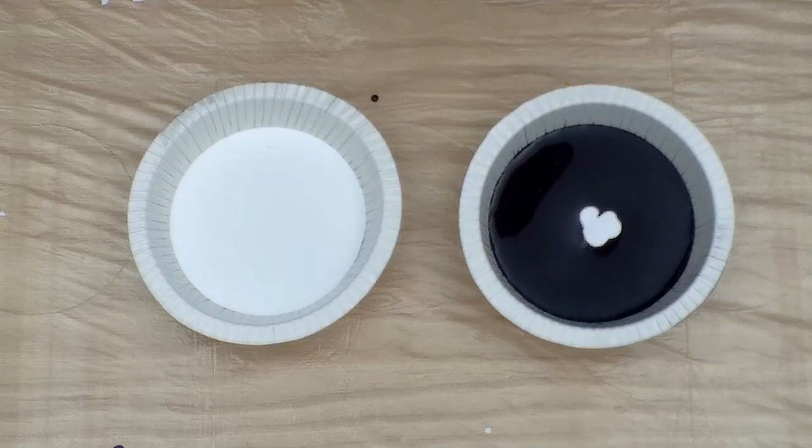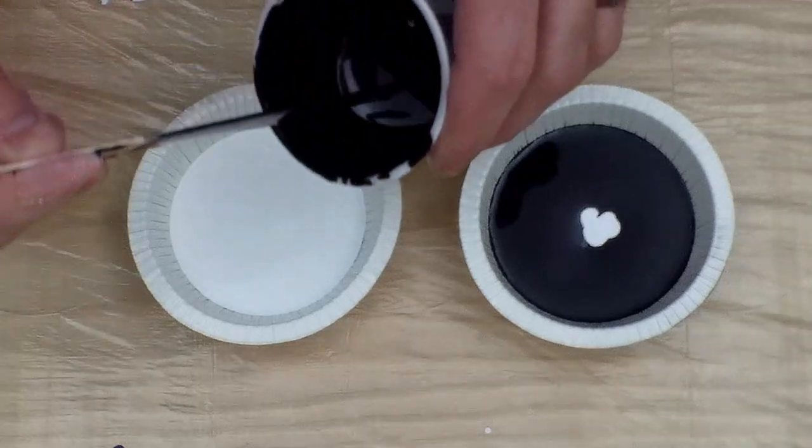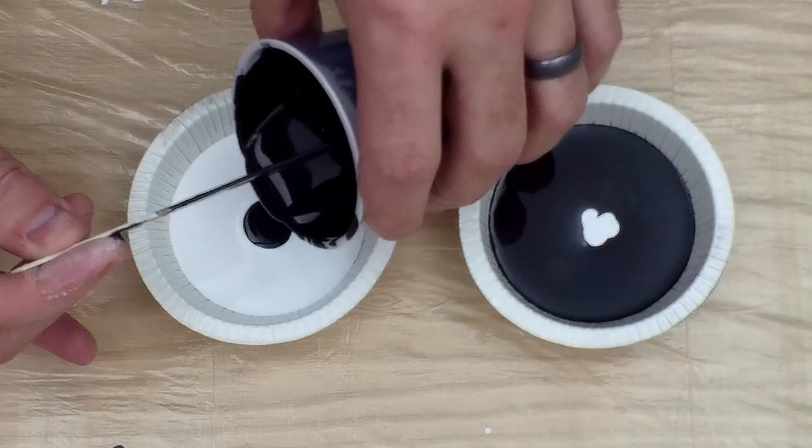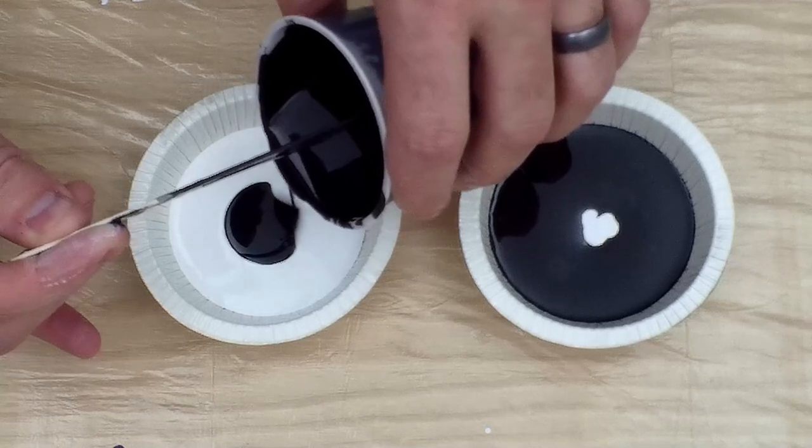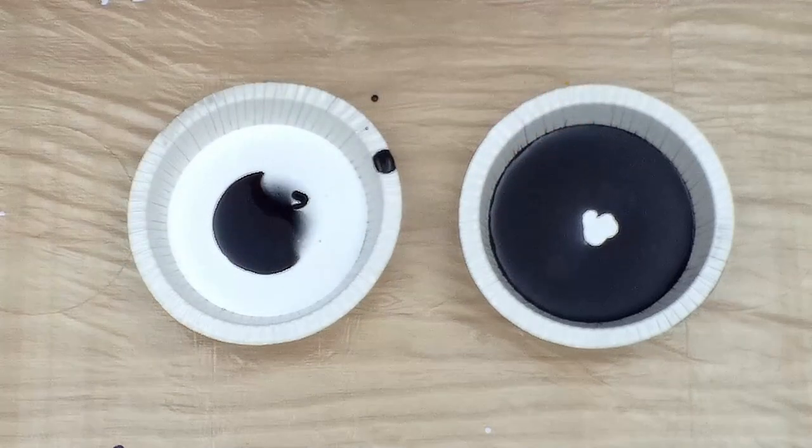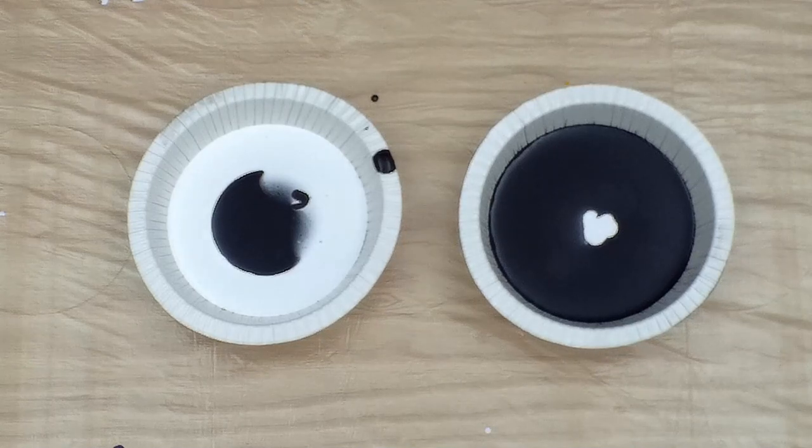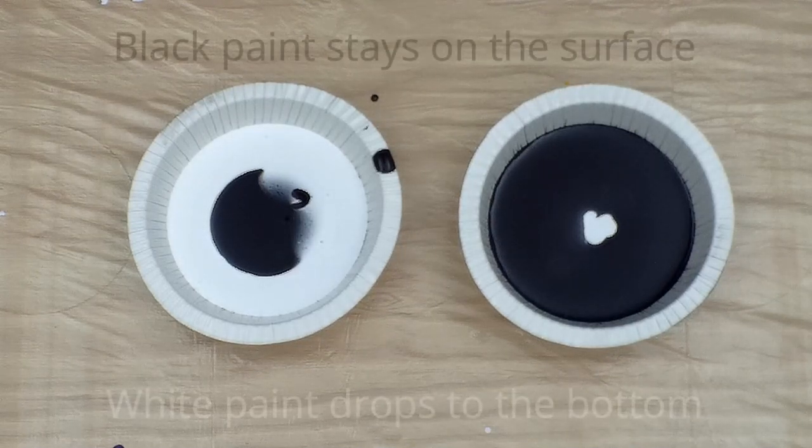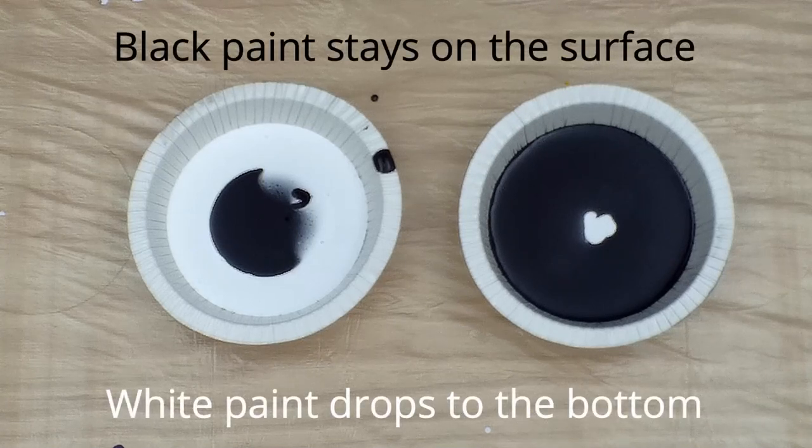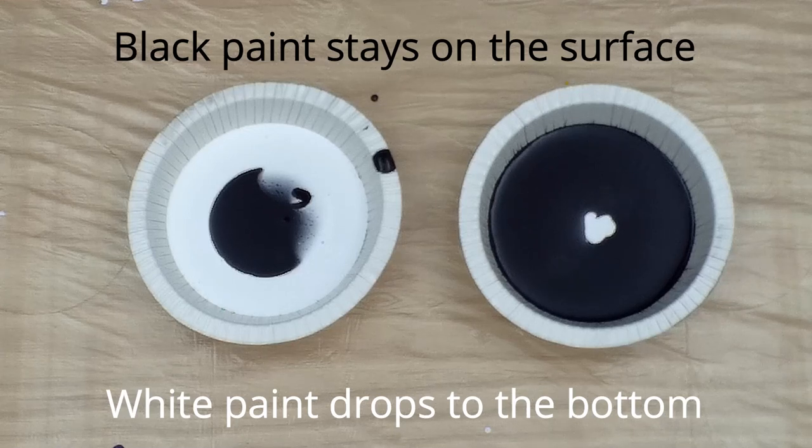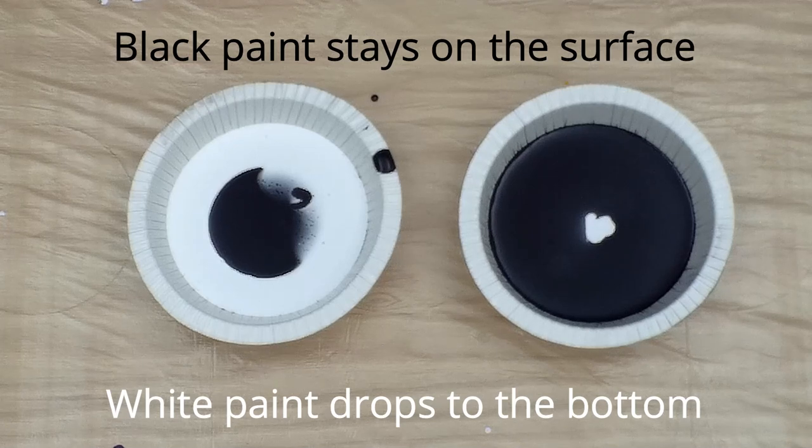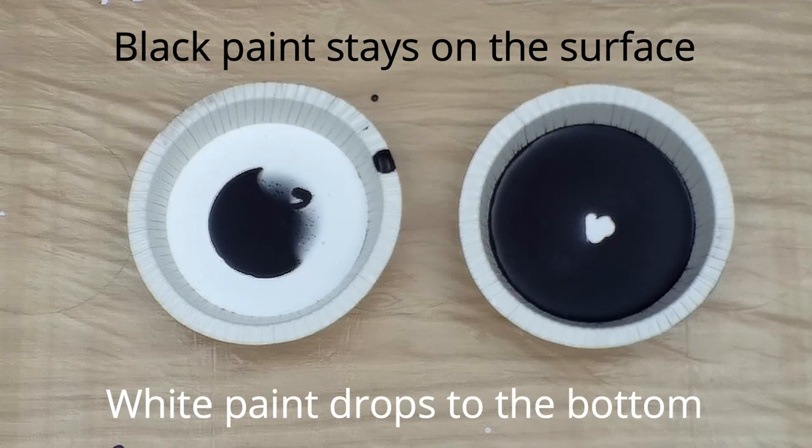One of the tests that they did - they took a surface, probably glass or something like that, that they could record from above and below. They poured black paint on a surface, and then they poured white paint on top. They recorded on both sides, and they noticed that the paint had some strange interaction. Then they did the exact opposite - they poured white paint and put black paint on top. It actually didn't do the same thing. The black paint just sat on top, and it didn't interact like the white paint interacted.